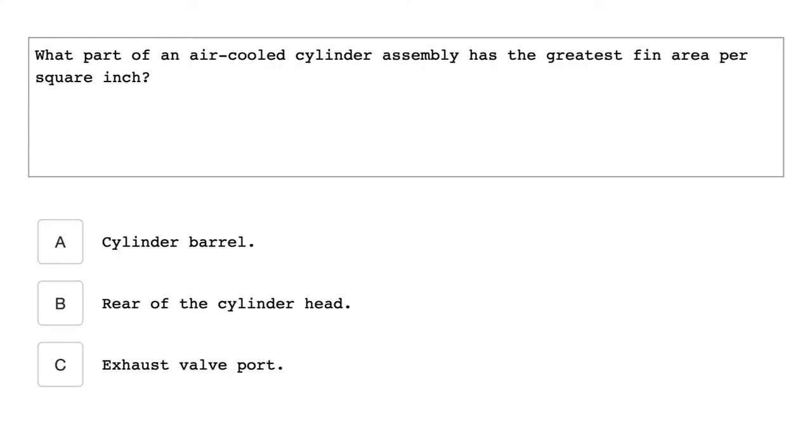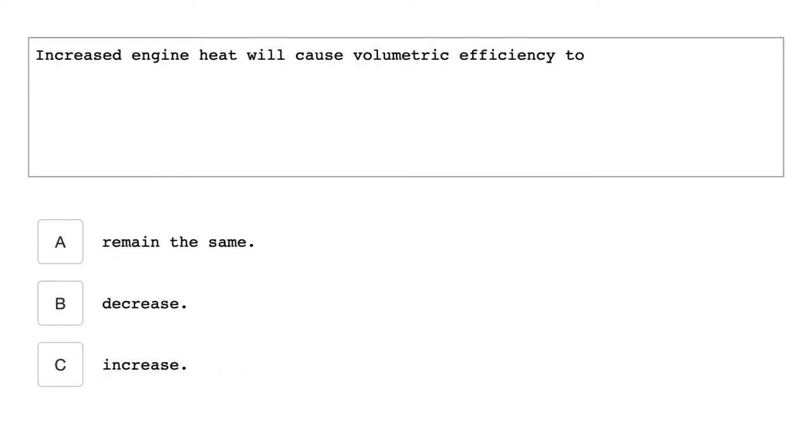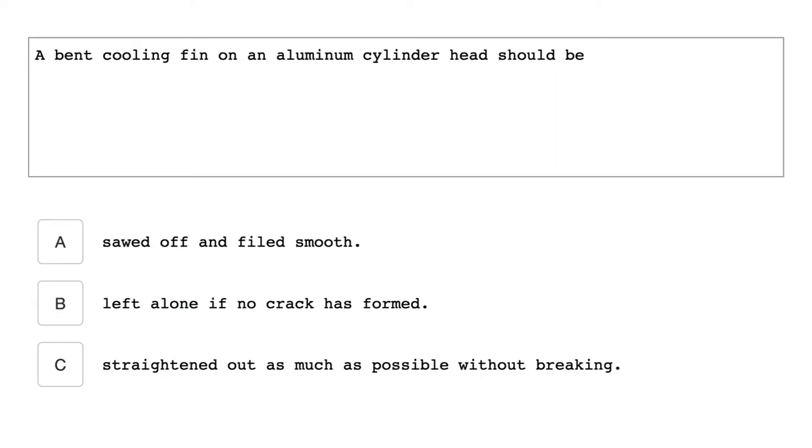What part of an air-cooled cylinder assembly has the greatest fin area per square inch? Exhaust valve port. Increased engine heat will cause volumetric efficiency to decrease. A bent cooling fin on an aluminum cylinder head should be left alone if no cracks have formed.